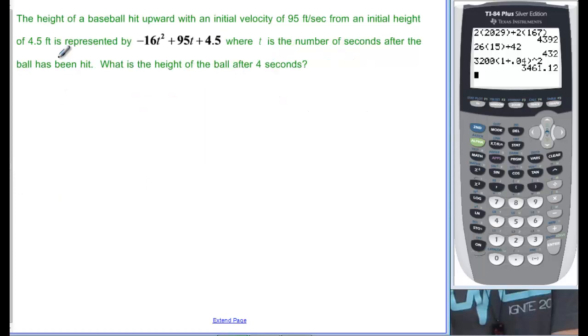One final problem. The height of a baseball hit upward with an initial velocity of 95 feet per second from an initial height of 4.5 feet is represented by this. And there's your 95, and there's your 4.5. So, they're already taken care of. Where T is the number of seconds after the ball has been hit.